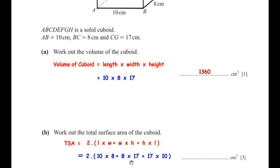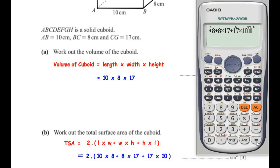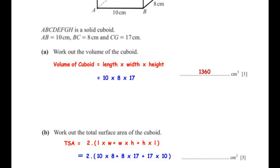This gives us the value 772 centimeters squared. So this is the total surface area of the cuboid.